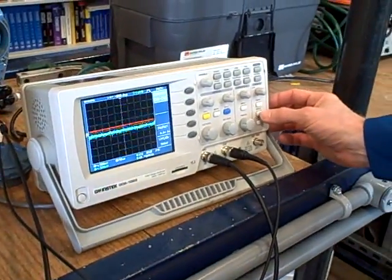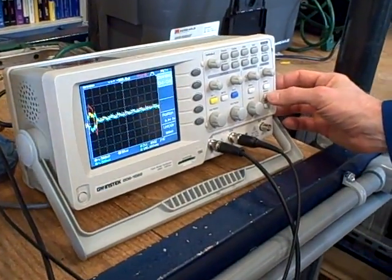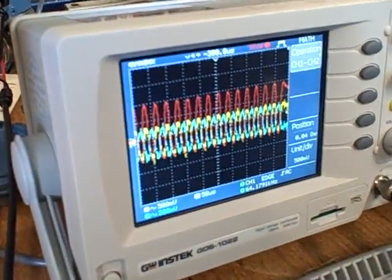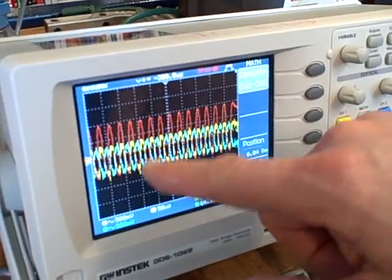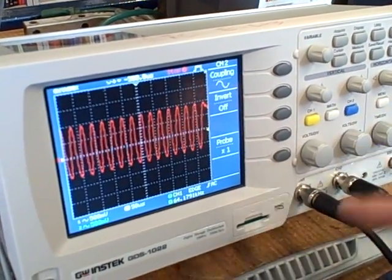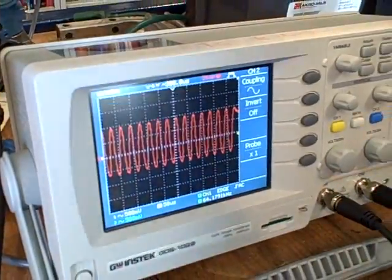I'm going to go to single sweep and hit that a couple times until I freeze a burst of activity. So right there we see red overlaid with yellow and blue. I can turn the yellow and the blue off. So all we see is the red, the difference between yellow and blue.